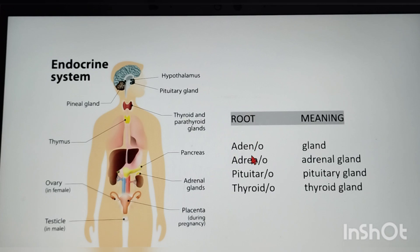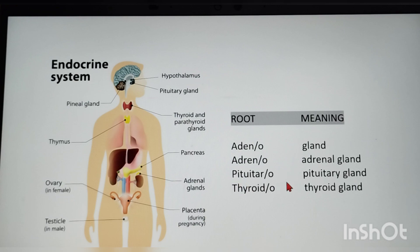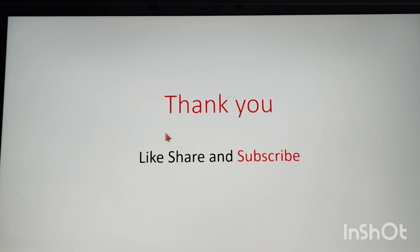The endocrine system root words: adeno — gland (we also came across this in the lymphatic system; lymphadenoma means lymph gland); adreno — adrenal gland; pituitary gland; thyroido — thyroid gland. If you find this video useful, kindly like, share, and subscribe to my channel. Thank you.